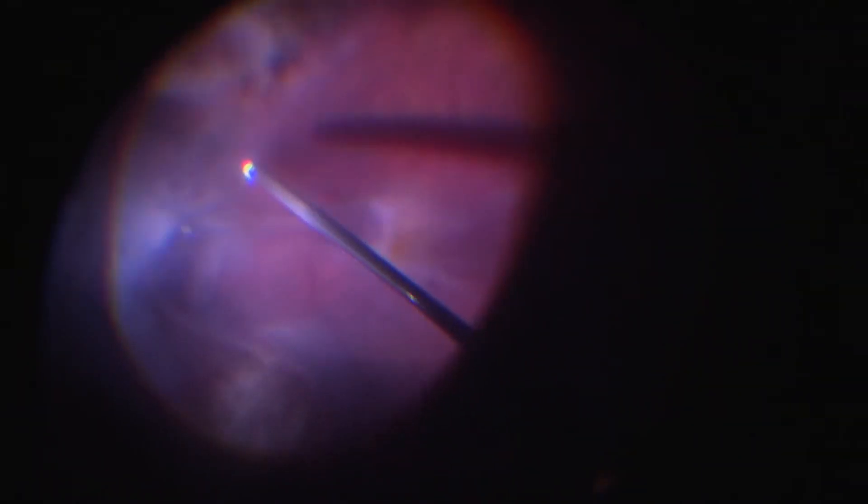Multiple opacified bands of vitreous and PVR are observed with radial extensions from a contracted, partially separated hyaloid face. The optic nerve and fovea are initially obscured.